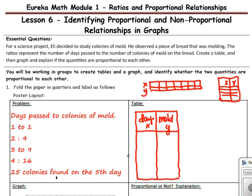So the amount of mold depends on how many days it was growing. Our first ratio is one to one. One day, one colony of mold. Two to four, two days, four colonies of mold.